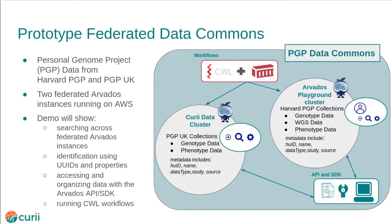Let's start with a demo of Arvados in action. The Personal Genome Project, or PGP, is a network of projects where participants have released their genetic data under consent that allows for unrestricted scientific research. The Arvados project originated from and serves as the technical foundation for the founding PGP project, Harvard PGP. In this demo, I will show how Arvados could be used to build a data commons for PGP.